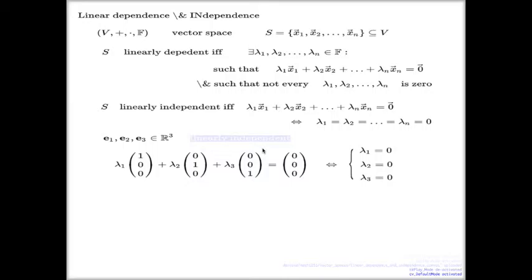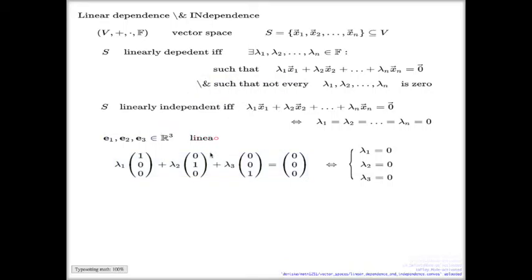Every time, this judgment of linearly dependent or linearly independent will come from the nature of the vectors you're looking at. In the case of e1, e2, e3 vectors, given the nice structure of these vectors, we see it immediately, because the left-hand side is basically a vector with entries lambda 1, lambda 2, lambda 3. And that's why we conclude that this set is linearly independent. With other vectors, it will require a little bit more work, and I'll show you this example as well.